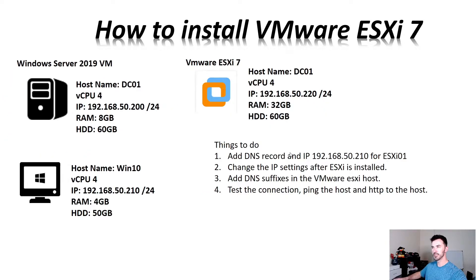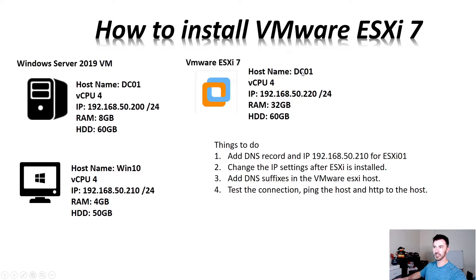In this video I have three VMs: my domain controller, a Windows 10 machine I'll use for managing and monitoring, and the ESXi host — ESXi01. I'm going to allocate 32 gigs of RAM and a 60-gig drive to it. We'll be adding a DNS record on the domain controller, changing the ESXi host IP to 192.168.50.220, adding a DNS suffix so it sits in the infosecpat.com domain, and testing connectivity via ping and HTTP.